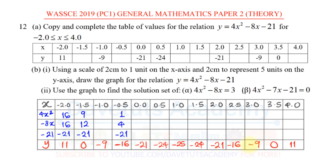As a DIY exercise, go ahead and populate all the other points and confirm that the answers we got are the same whether you work directly or use the calculator. That is how you build proficiency in generating this table. Having done this, we can now input all values into the table: when x = 0, y = -21; x = -1, y = -9; x = -0.5, y = -16; x = 1, y = -25; x = 1.5, y = -24; x = 2.5, y = -16; x = 4.0, y = 11.